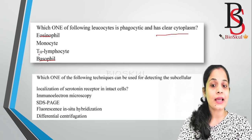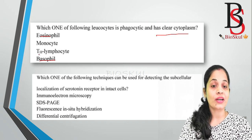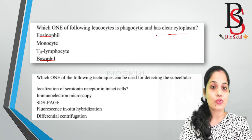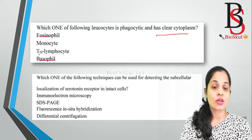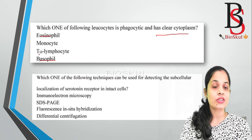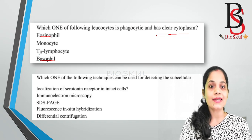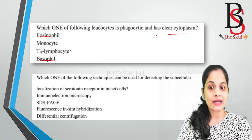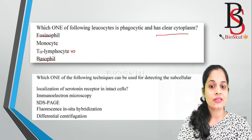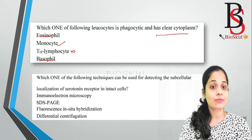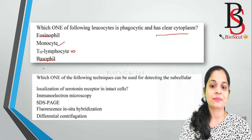Here one option is the T helper lymphocyte. The T helper lymphocyte has the main role in cell-mediated immune response, where it produces cytokines that help in the activation of B cells and cytotoxic T cells. It has no phagocytic activity, so this option is also wrong. The correct answer is monocyte. Monocyte has clear cytoplasm and its primary role is in phagocytosis.